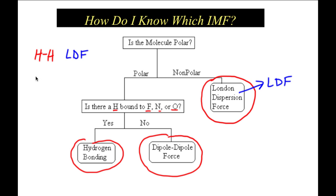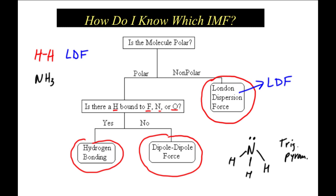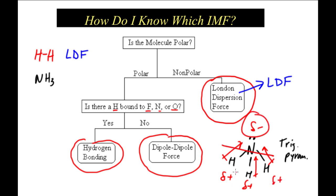If I had a molecule such as NH3, I'd have to figure out: is it polar or non-polar? I draw the Lewis structure and find there's a lone pair of electrons, so it's going to push the hydrogens down. I have what's called a trigonal pyramidal structure. Therefore, electrons are being pulled towards the nitrogen. I get a negative side and a positive side, so this molecule is polar. I then ask: is hydrogen bonded to nitrogen, fluorine, or oxygen? Yes, nitrogen is bonded to hydrogen. So therefore, this is hydrogen bonding.